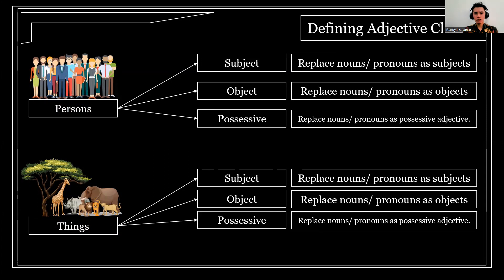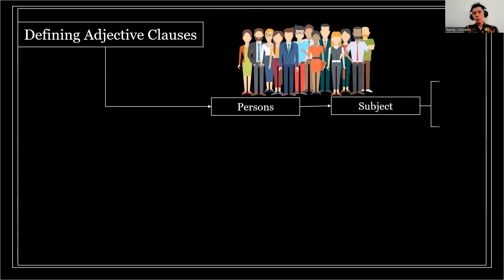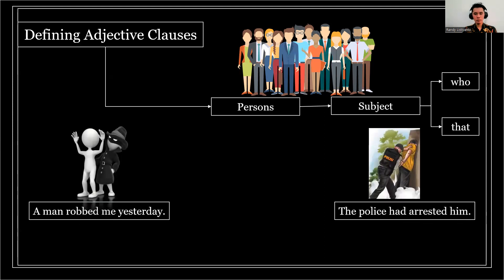The subject or object can be in the form of persons or things. Adjective clauses can be used to explain or modify persons or things. You need first of all to be able to identify the subject and the object of the sentence. For example, the first rule: if you want to give elaboration about a person — whether a subject or an object — you need to give additional information related to that thing or person. We have two sentences: 'A man robbed me yesterday' and 'The police had arrested the man.'